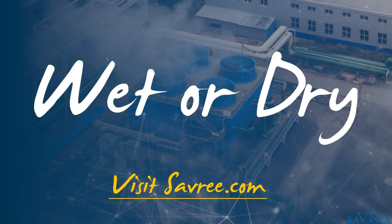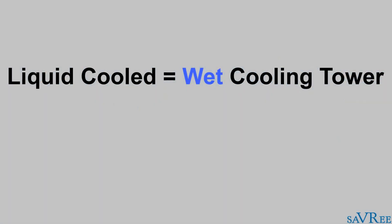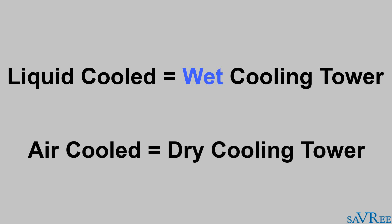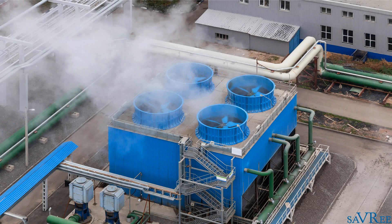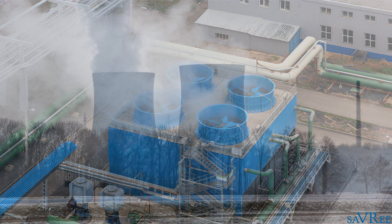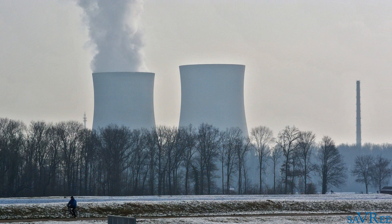Wet or dry. A cooling tower that uses liquid as a cooling medium is a wet cooling tower. A cooling tower that uses air as a cooling medium is a dry cooling tower. This video focuses upon wet cooling towers, as these are the more common types. Wet type cooling towers are easy to identify due to the white plumes of moisture rising from the towers. This moisture is actually evaporated water.